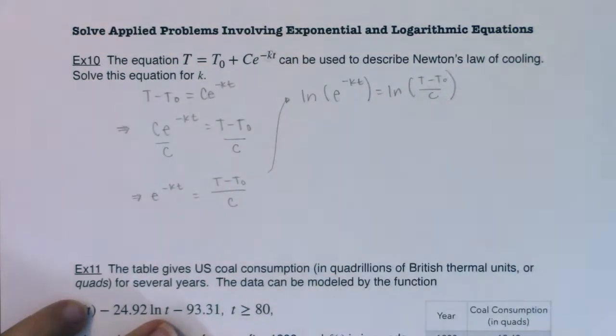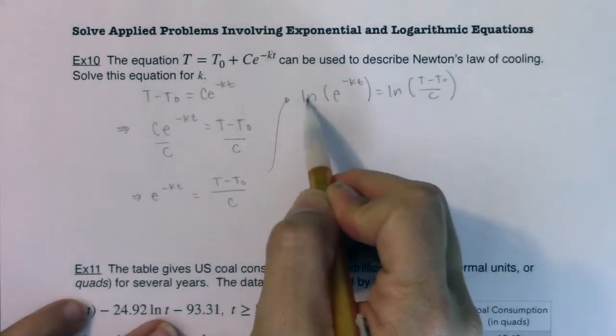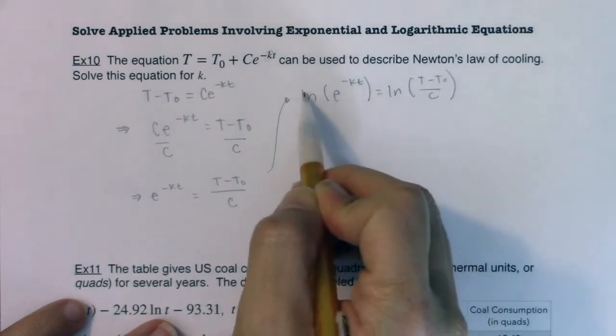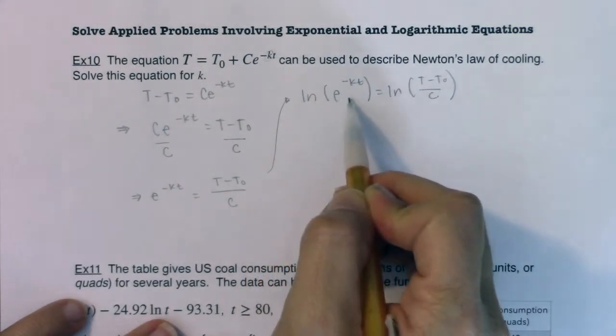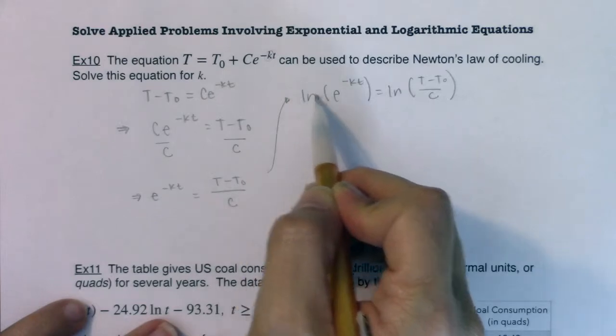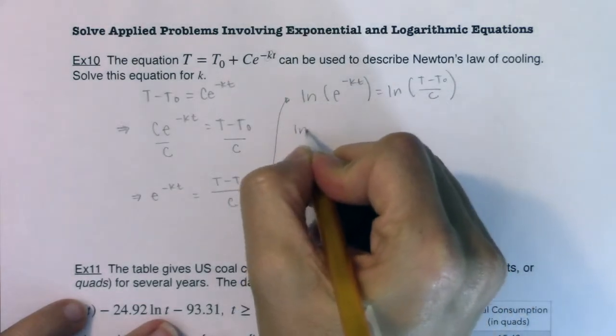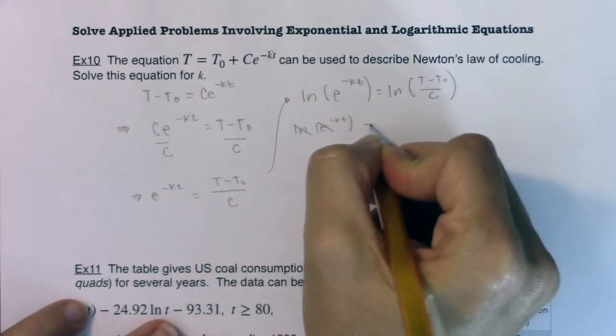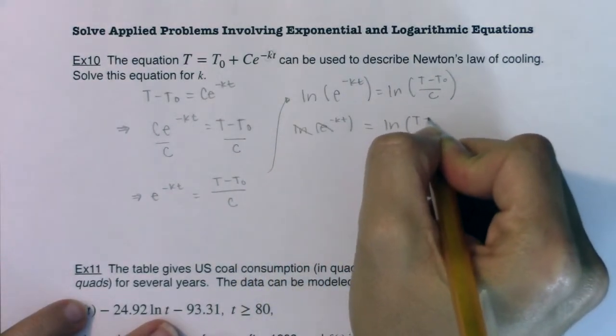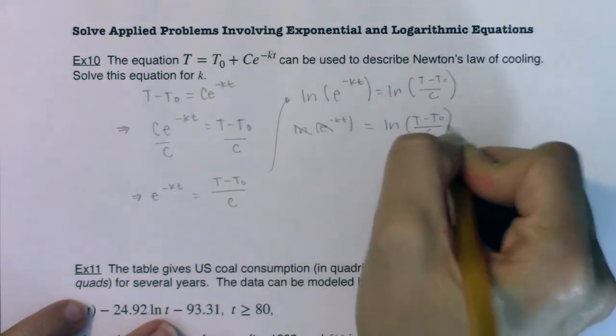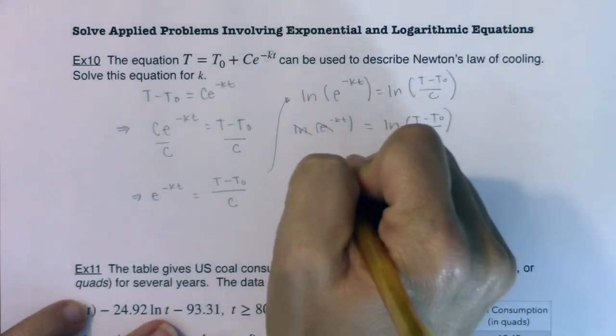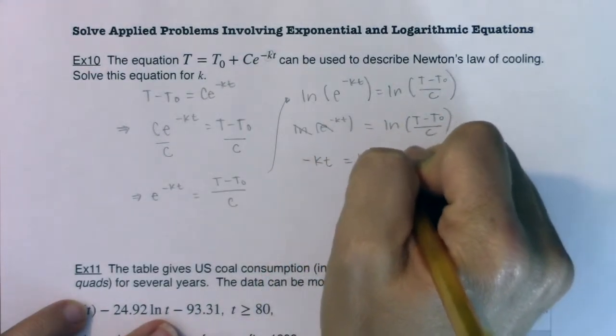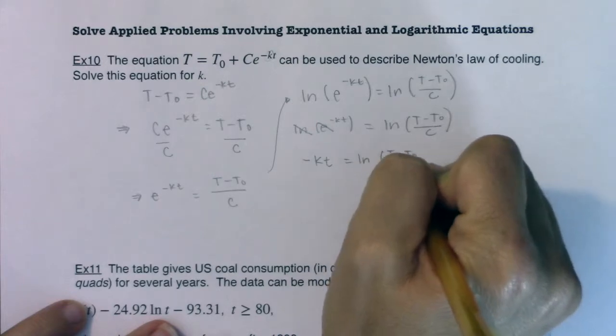I have no idea what this is and I don't need to. I can just leave it like that. But anytime I see an ln and an e, I know that the base of my logarithm and the base of my power are the same. So these are going to cancel out and I'll just make sure we write that so I'm not skipping any steps. These will cancel out. And I'm left with negative KT is equal to ln of T minus T sub 0 over C.